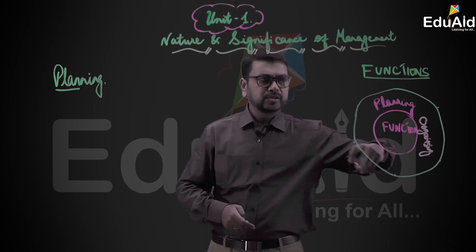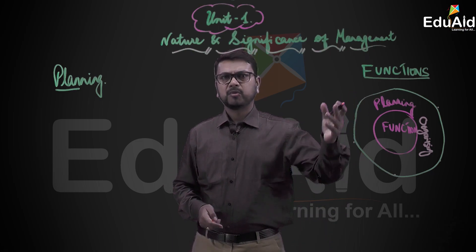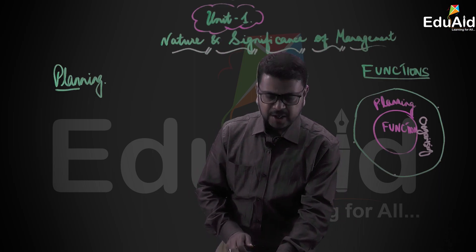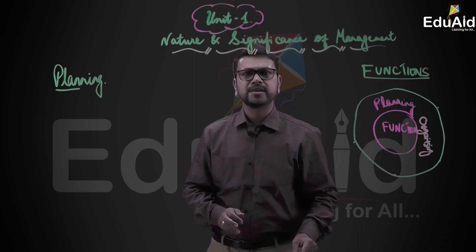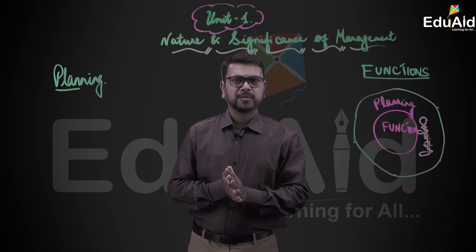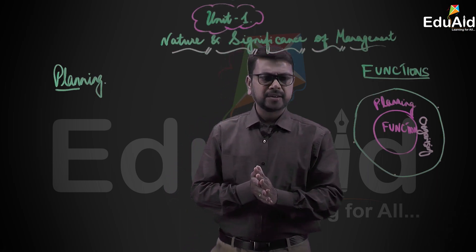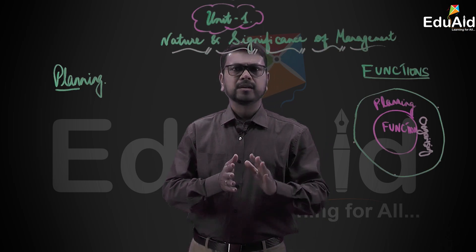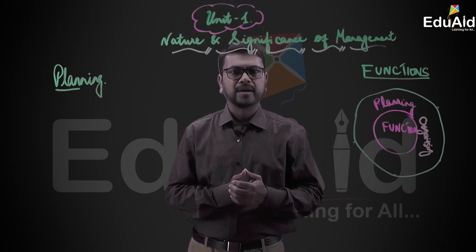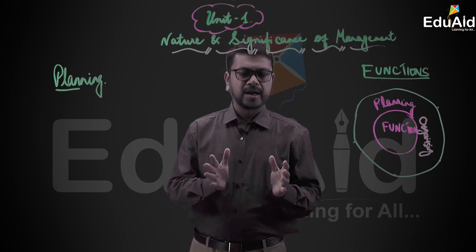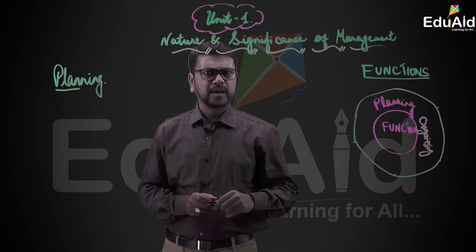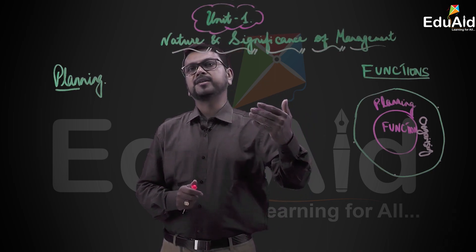The next function is organizing. You can try to draw a chart or whatever you feel is convenient. What is organizing? Organizing refers to the harmonious adjustment of the various elements of the management function. It means arranging things such as the various resources in a systematic manner in order to get the work done. You need to be organized — your thought process, your marketing strategy.